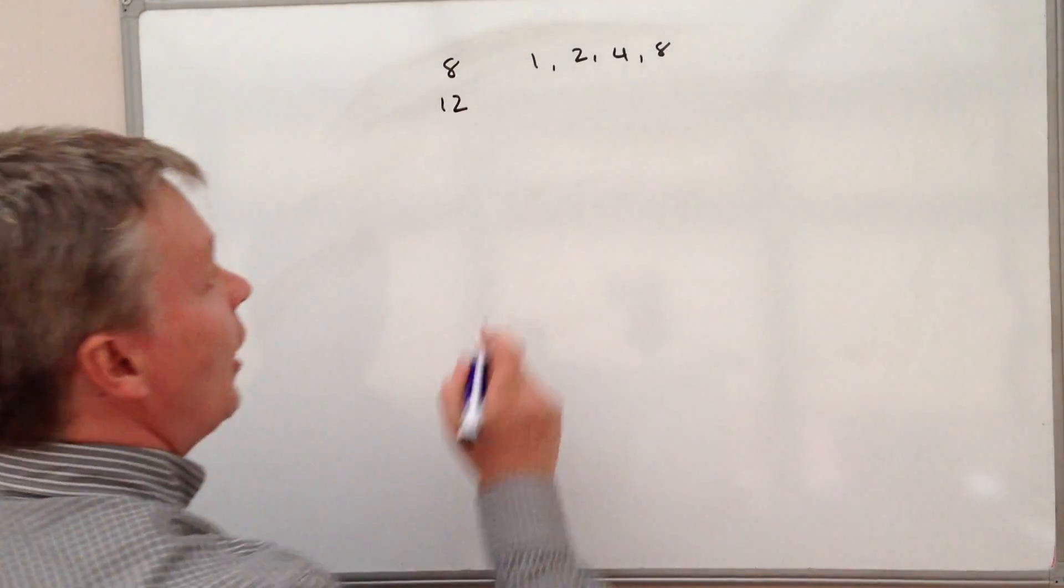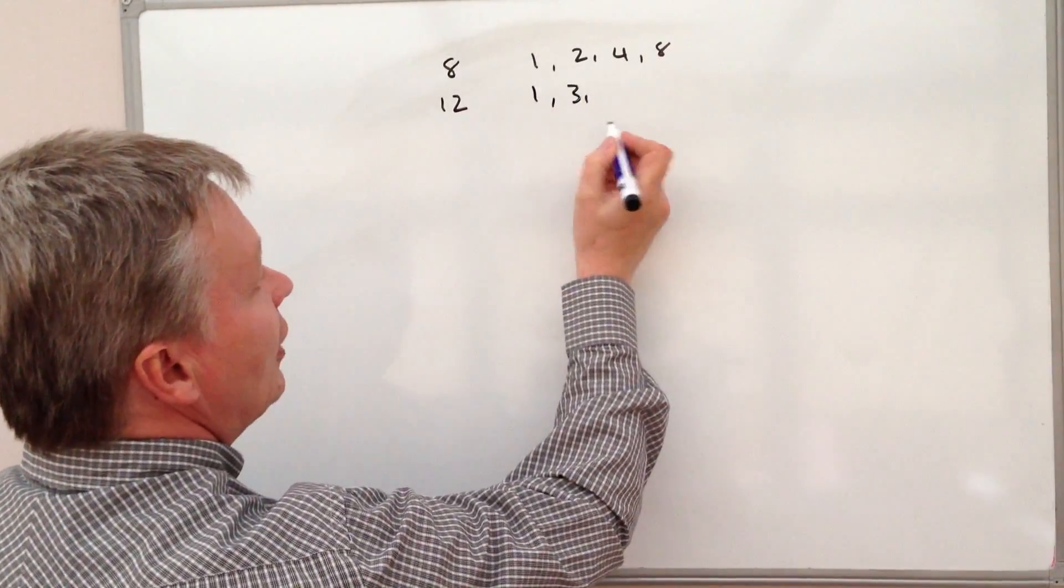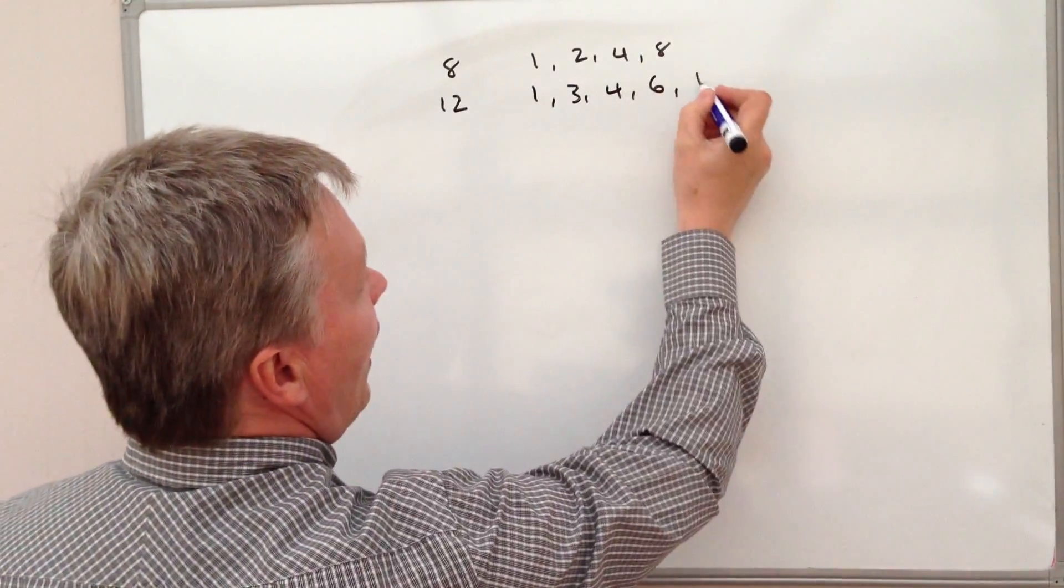We'll do the same for 12. So we've got 12 is 1, 3 will go into 12, 4 will go into 12, 6 will go into 12, and 12.